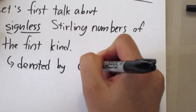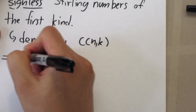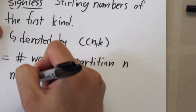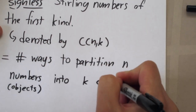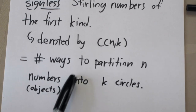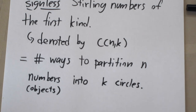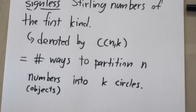We denote the signless Stirling number of the first kind by c(n,k). It is defined as the number of ways to partition n objects into k circles (cyclic groups). Instead of putting objects into boxes, we arrange them in circles, where the circular arrangement within each group matters.